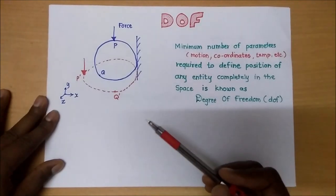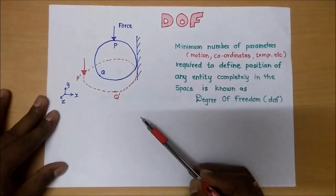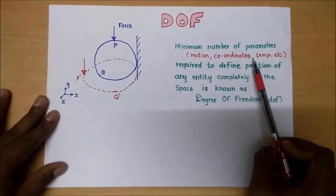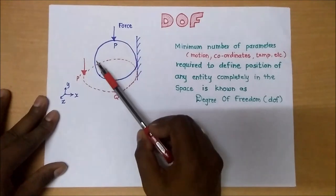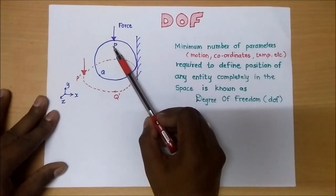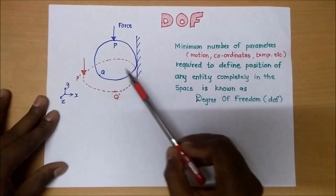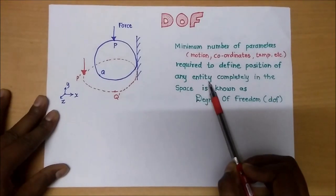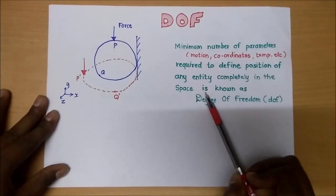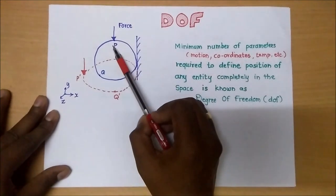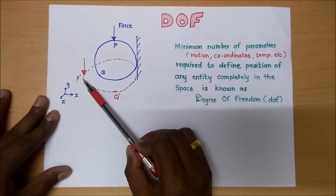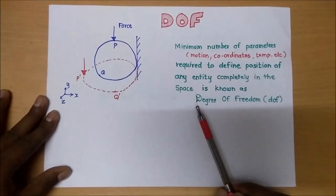To locate these points P, Q, and the support points, we need degrees of freedom. Degrees of freedom indicates the minimum number of parameters — like motion coordinates or temperature — which can be defined so that we can find the exact position of these points. In other words, the minimum number of parameters required to define the position of any entity completely in space is known as degrees of freedom. This is an entity which can be defined with the help of coordinates to get the exact location, and that is called degrees of freedom.